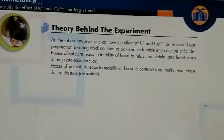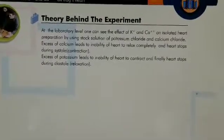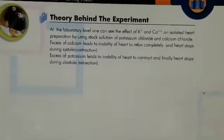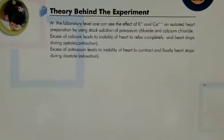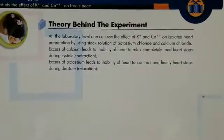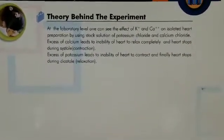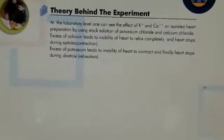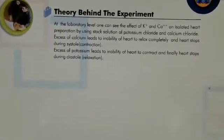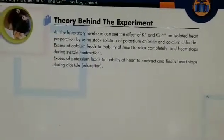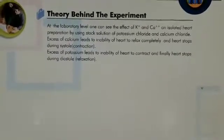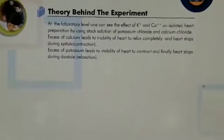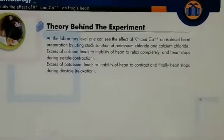Calcium ions must be maintained at a normal level. If we give excess calcium, the heart will only show contraction and will not relax — the heart stops during contraction, that is systole. If we give excess potassium, it leads to inability of the heart to contract, and finally the heart stops during diastole — the heart will only relax and will not contract.